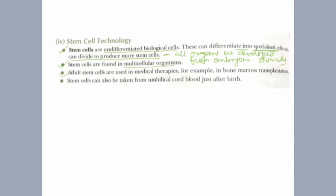Adult stem cells means the stem cells taken from our body after birth — those are known as adult stem cells. They are used in medical therapies, for example in bone marrow transplantation. We use stem cells from bone marrow. Using recombinant DNA technology, new bone marrow will start to form. Stem cells can also be taken from umbilical cord.